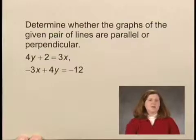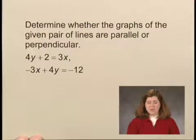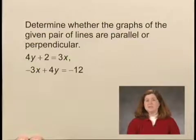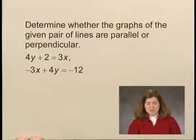We can tell whether two lines are parallel or perpendicular by looking at their slopes. If the lines have the same slope, they're parallel. If the product of the slopes is negative 1, they're perpendicular. So we'll have to start by finding the slope of each line.